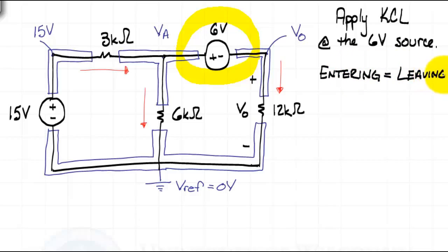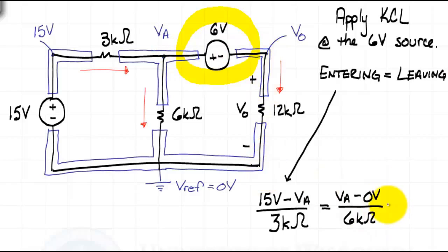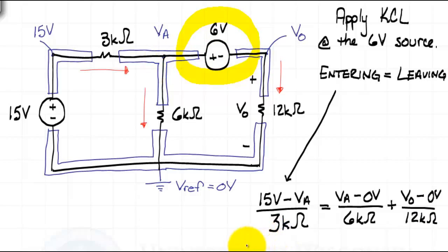To apply KCL at the 6 volt source, we simply set the currents that enter the source equal to the currents that leave the source. Applying KCL at that source, we have one current that enters: 15 volts minus VA over 3 kilohms. This must equal the currents that leave the voltage source. First, the current through the 6 kilohm resistor can be written as VA minus 0 volts over 6 kilohms. Then the current leaving the other side of the voltage source can be written as VO minus the 0 volt reference node over 12 kilohms. Right now we have one equation with two unknowns. The second equation comes from the 6 volt voltage source itself — a voltage source connected between two nodes defines the difference in potential between those nodes. So VA, the higher voltage, minus VO, the lower voltage, equals 6 volts.